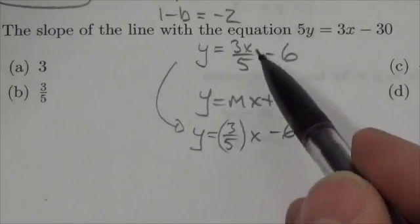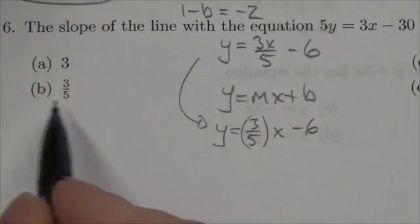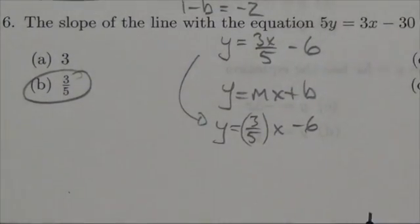You have to be comfortable with what's going on here. So my slope is this value 3 fifths, and this is, once again, b.